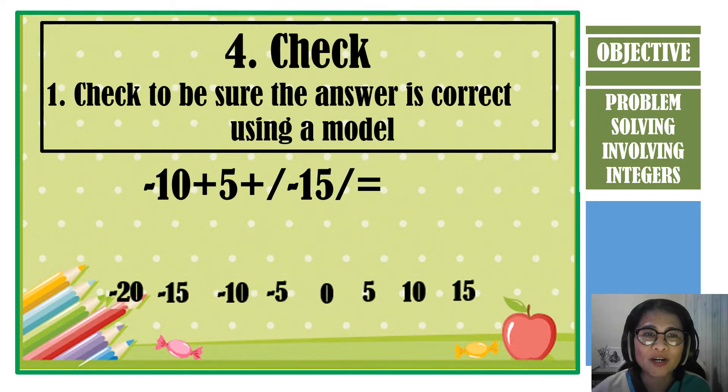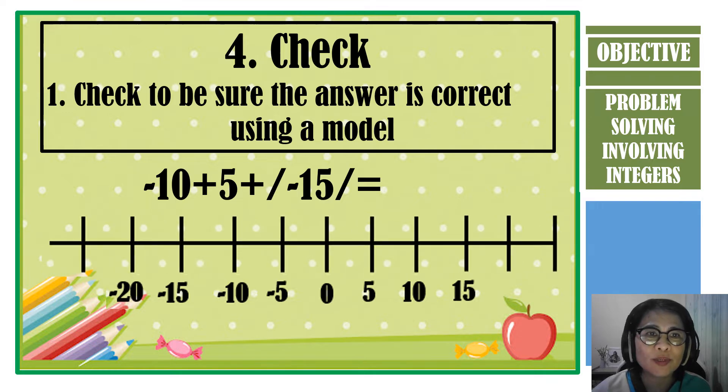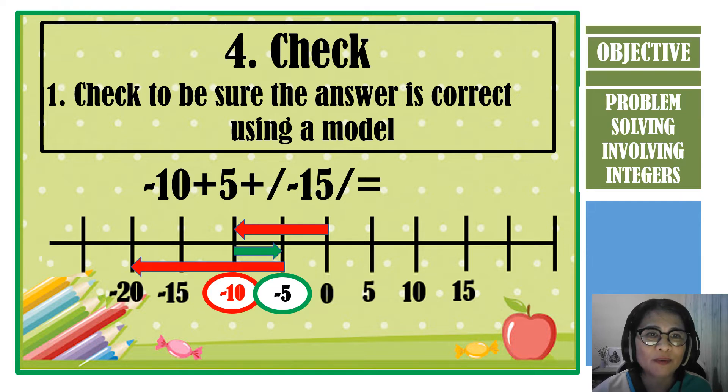Let us now check our answer. Using the model number line, from 0, we move 10 points to the left to go down 10 feet. And then move 5 points to the right to go up 5 feet. We are now on negative 5. And from there, we move 15 points to the left for descending 15 feet. And we stop at negative 20. So therefore, our answer is correct. The answer is negative 20.